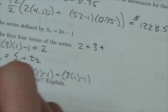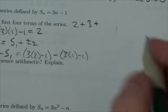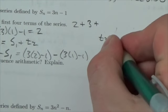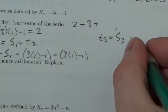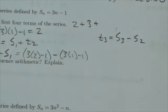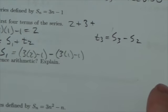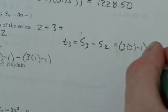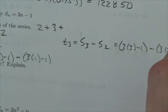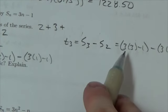To get the next term of the sequence, I'm just going to follow this same pattern, just a little bit quicker now. To get the third term, I will take the sum of the first three, and I will subtract the sum of the first two. And this is going to end up being three times three minus one, minus three times two minus one.